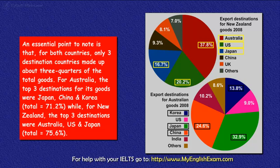For Australia, the top three destinations for goods were Japan, China and Korea, a total of about 71.2%. While for New Zealand, the top three destinations were Australia, the US and Japan, a total of about 75.6%.